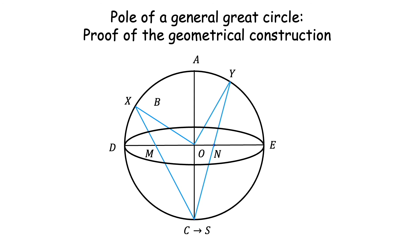Imagine rotating the primitive circle about the diameter DE by 90 degrees, so that the horizontal primitive becomes a vertical plane. The point C, which was in the horizontal plane, has now come into the vertical plane and coincides with the south pole. Then OX and OY are two directions in space which are at 90 degrees to each other. Thus M and N are nothing but the stereographic projections of these directions from the south pole S. Since the directions in space are at 90 degrees, their stereographic projections M and N are also at an angular separation of 90 degrees. So N is the pole — 90 degrees away from M.